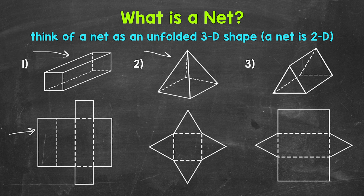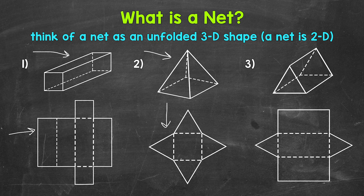Next for number 2 we have a square pyramid. Below we have the net of that square pyramid. So imagine folding that net up along those dashed lines and it will fold into the square pyramid.